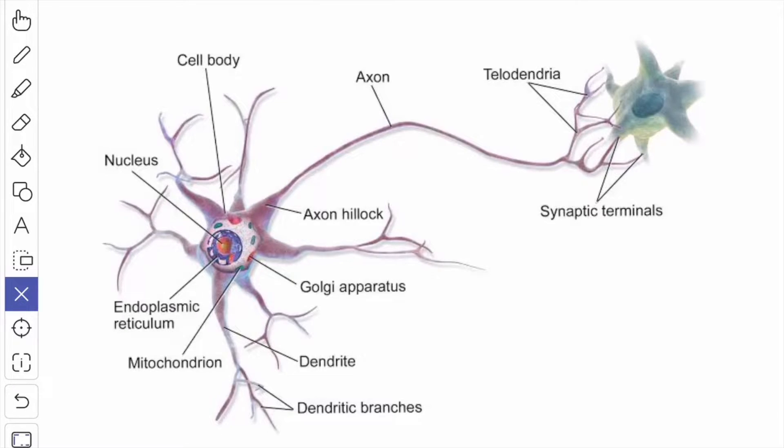The mature neuron do not divide by mitosis after birth, except the bipolar olfactory neurons in the nasal mucous membrane and some neurons of the hippocampus.